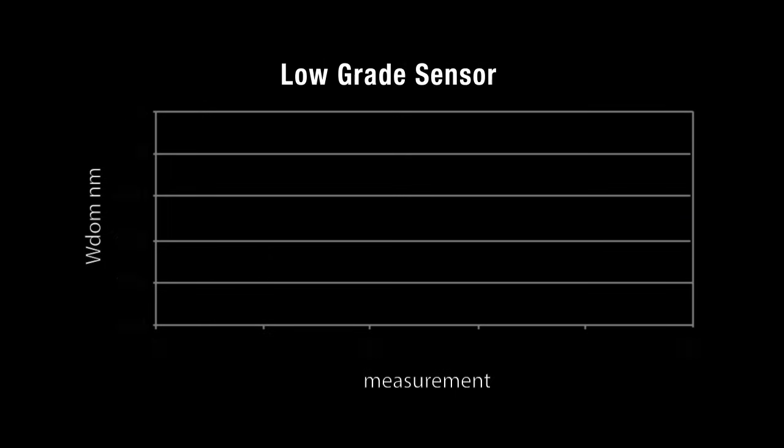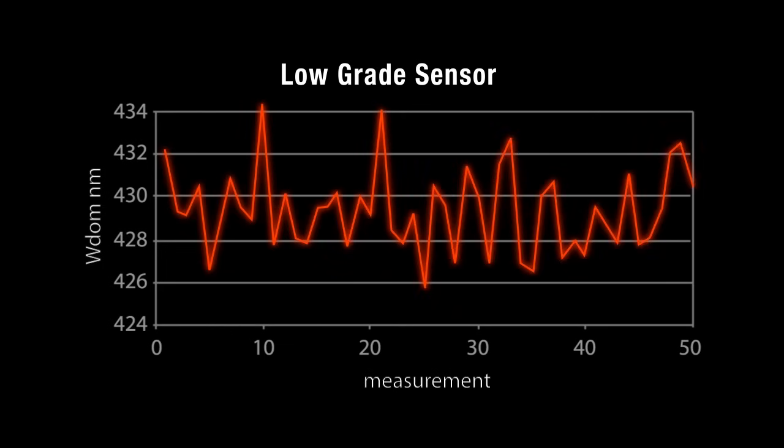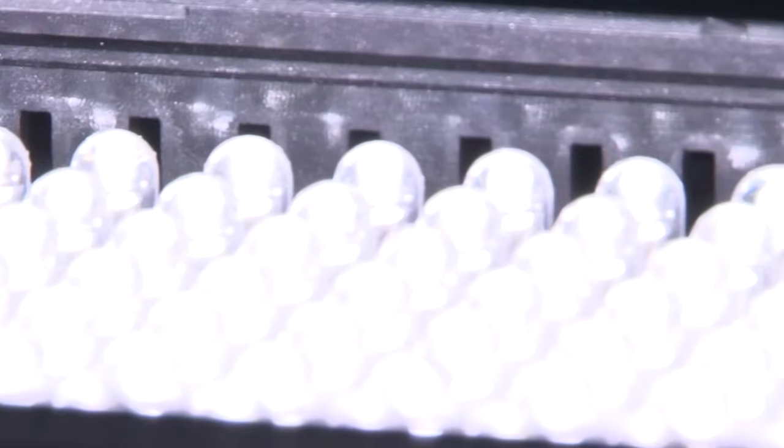Inferior sensors use blue phosphors to enhance blue wavelength sensitivity. These phosphors fade and degrade over time. Low-grade sensors lose blue sensitivity much quicker, which causes them to drift and go out of tolerance.